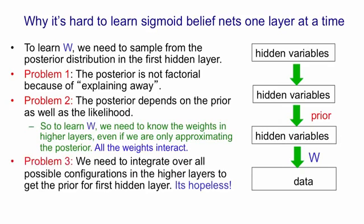In fact, it's even worse than that, because to compute that prior term, we need to integrate out all the hidden variables in higher layers. That is, we need to consider all possible patterns of activity in these higher layers, and combine them all to compute the prior that the higher layers create for the first hidden layer. Computing that prior is a very complicated thing.